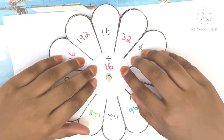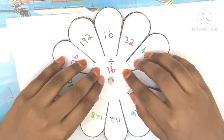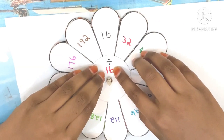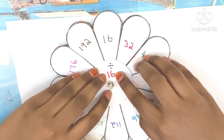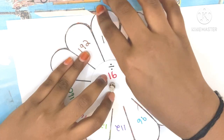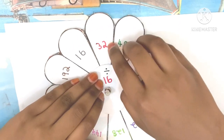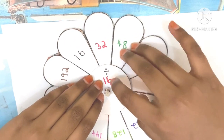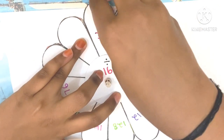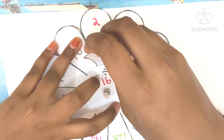So, 16 divided by 16 — what do you guess the answer would be? It is 1. Now, 32 divided by 16, what will be the answer? It is 2.